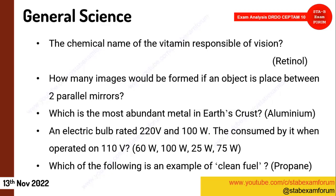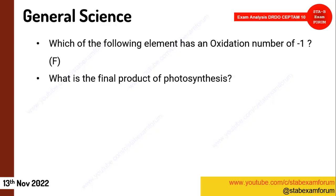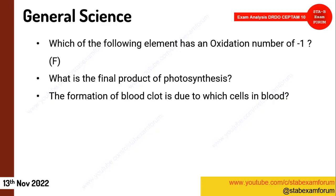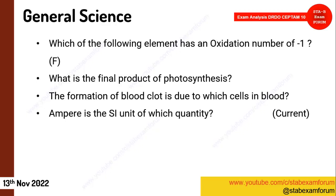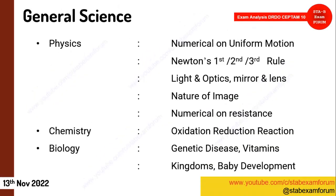A question that came on the last day but not today: 'What is an example of clean fuel?' — propane was the right answer. Some questions on oxidation numbers of certain elements were asked; this question also appeared on the previous day. From biology, the final product of photosynthesis was asked — very easy. Again from biology: 'Blood clot formation is due to which of the following cells in the blood?' — the answer was blood platelets. In the third shift, 'Ampere is the SI unit of which quantity?' — the answer was current. A relation between kinetic energy when an object falls from height was also asked.